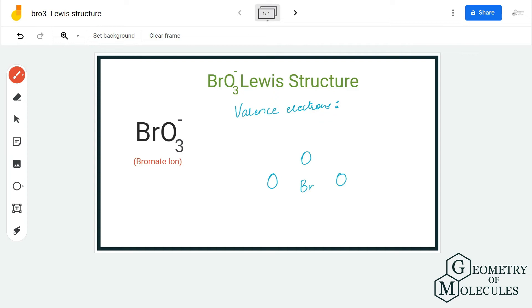Hi guys, welcome back to our channel. In today's video, we are going to look at the Lewis structure for bromide ion. It comprises of one bromine atom and three oxygen atoms.